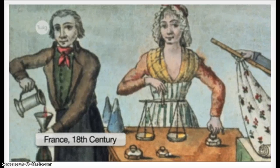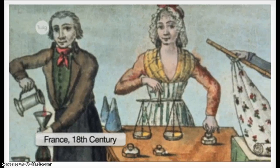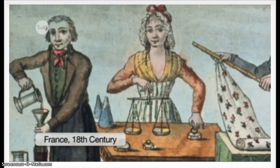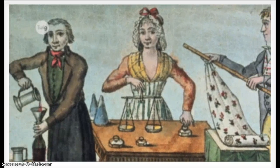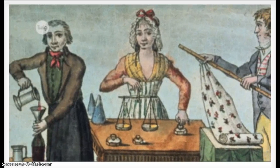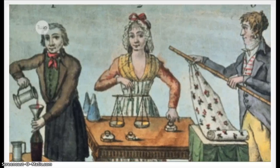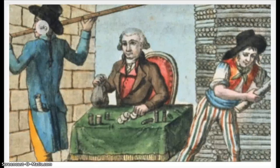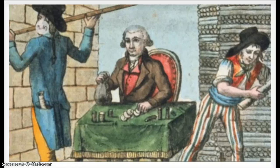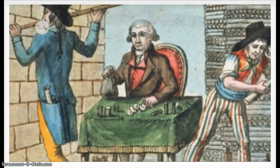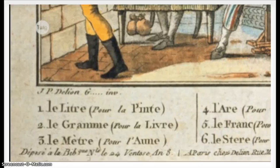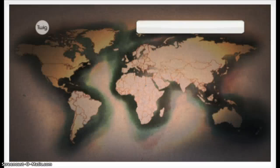By the 18th century, in France alone there were over 800 different names for measures. The variances in these measures meant there were around 250,000 different units of measurement. A standard measurement needed to be found: the meter.